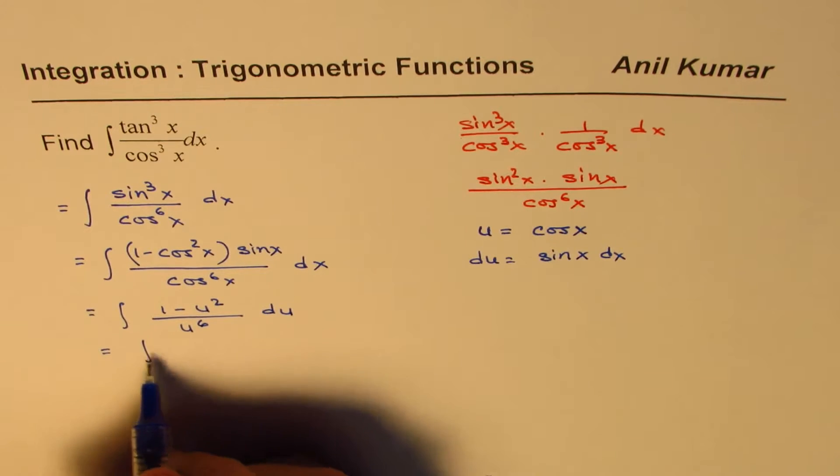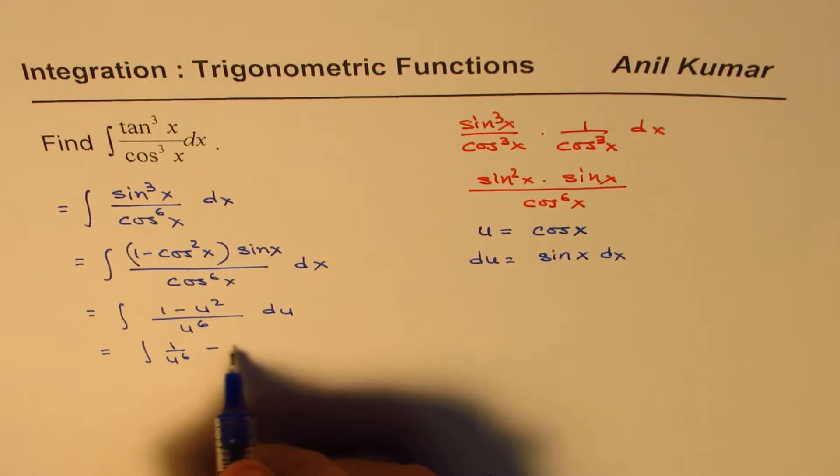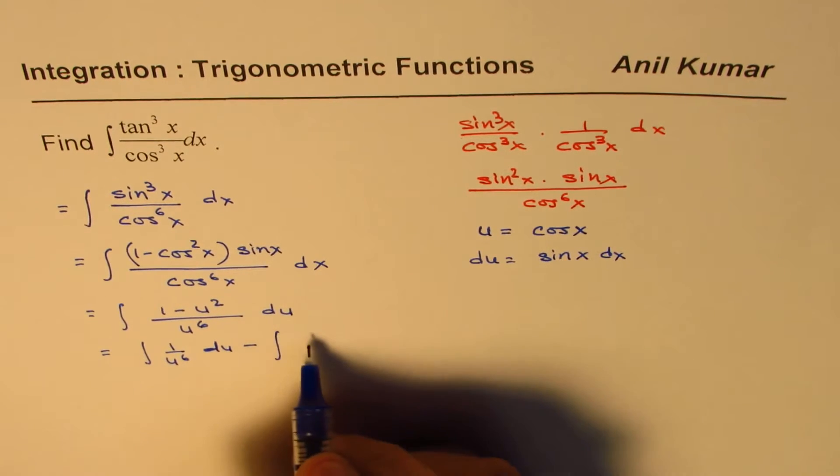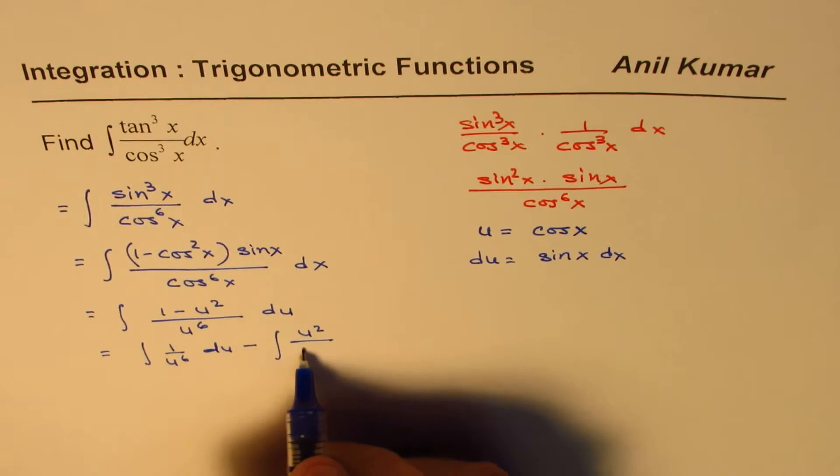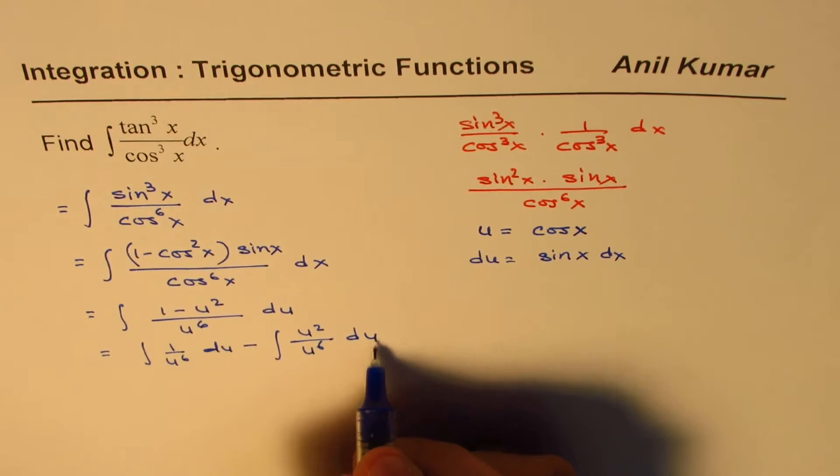Now you can write this as integral of 1 over u to the power of 6 du, minus integral of u square over u to the power of 6, which is u to the power of 4 du, correct?